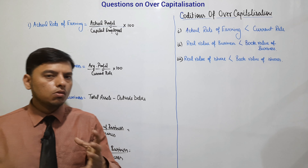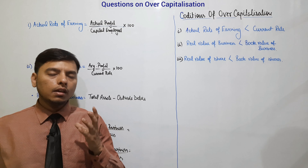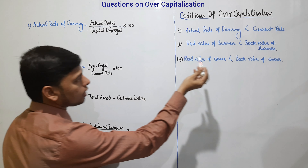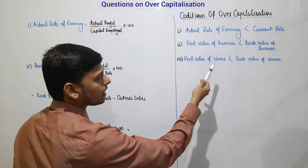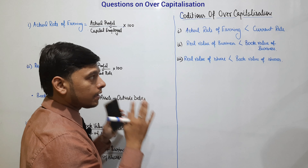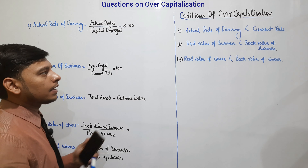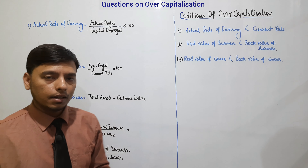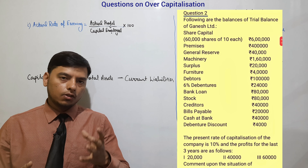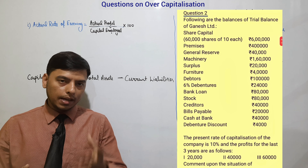We are going to solve the second question on over-capitalization. Before reading the question, we should know about the three conditions which must be satisfied to determine whether a company is in an over-capitalized or under-capitalized situation. The three conditions are: actual rate of earning should be less than current rate; real value of business is less than book value of business; and real value of shares is less than book value of shares. If all three conditions are satisfied, the company can be said to be in an over-capitalized situation.